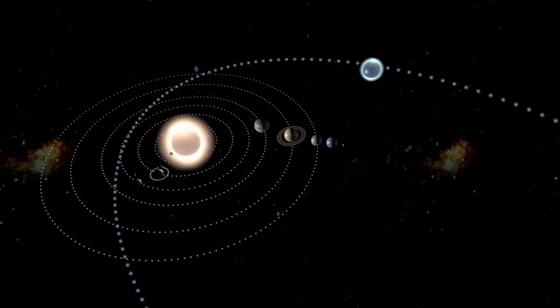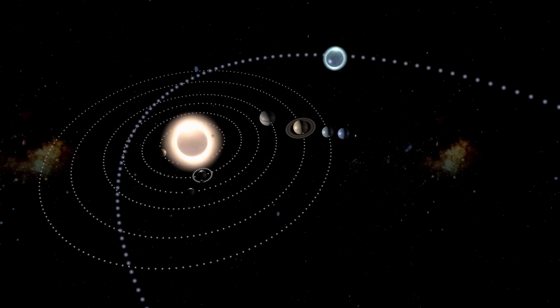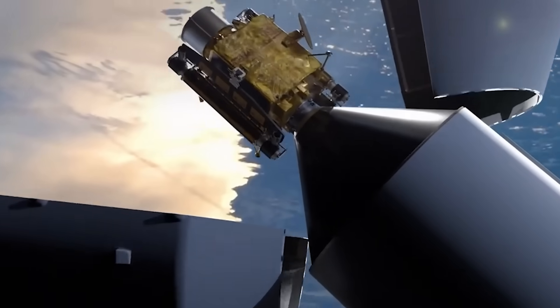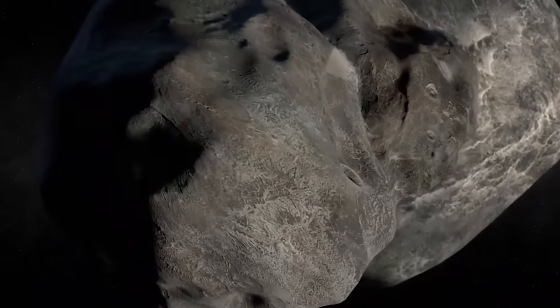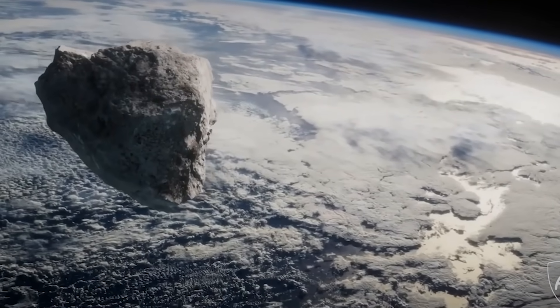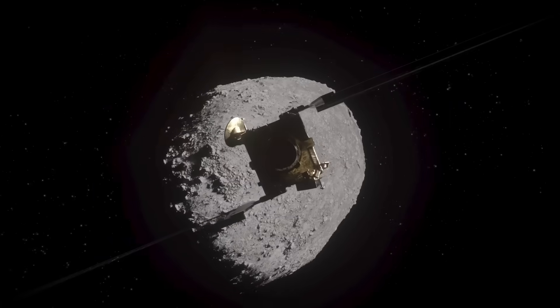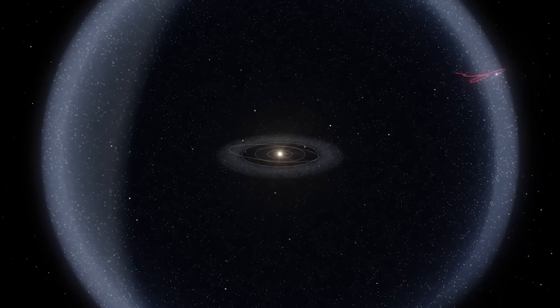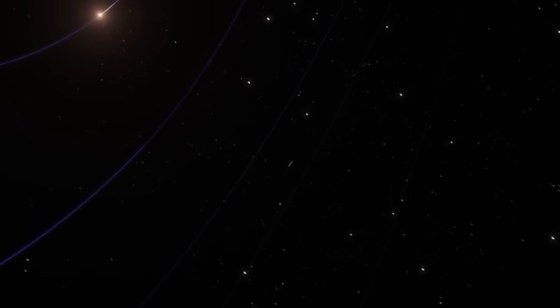The thing nobody tells you about planetary defense is just how new and experimental it is. The DART mission in 2022, which successfully nudged the small asteroid Dimorphos, was a monumental proof of concept. But DART was like hitting a thrown baseball with a bat, deflecting a fragmented comet like 3i Atlas would be like trying to stop a cloud of buckshot.